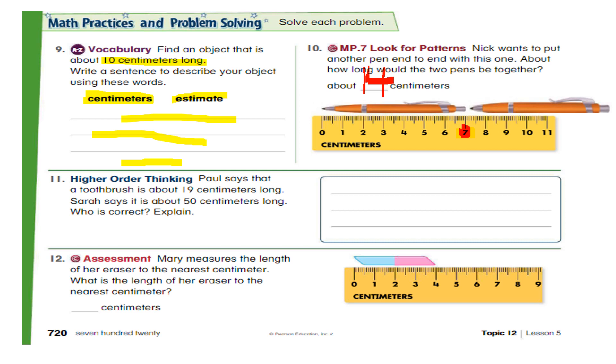Now question 11. Paul says that a toothbrush is about 19 centimeters. And then Sarah says that it is about 50 centimeters. So who is correct? Just take out your toothbrush and your ruler and measure your toothbrush with the ruler. And write here, who do you think is correct? Paul is correct or Sarah is correct?